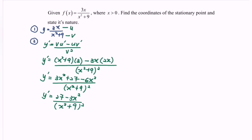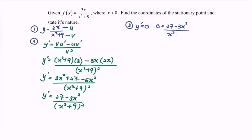Step three is to find the critical value, also called the stationary point. We set y′ = 0, so: 0 = (27 − 3x²) over (x² + 9)².